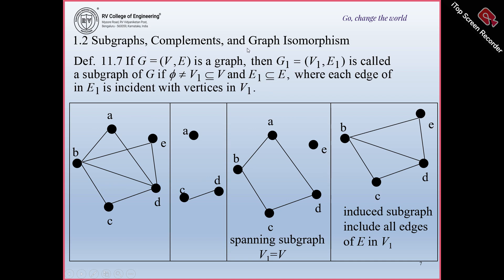Next is subgraph, complements, and graph isomorphism. Suppose G is a graph with vertex set V and edge set E. Then G1 = (V1, E1) is called a subgraph if V1 is a non-empty subset of V and E1 is a subset of E, where each edge in E1 is incident with the vertices in V1. For example, if I consider vertices A, C, D and one edge present in the original graph, this is a subgraph of G.